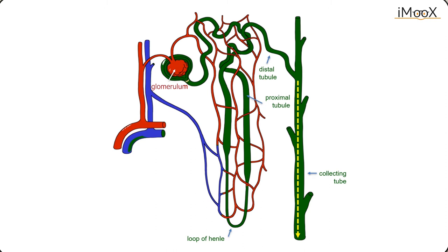To do so, the tubular system of the kidney is built in four consecutive departments with different functioning. The proximal convoluted tubule reabsorbs ions, water, and nutrients. It removes toxins and it adjusts the pH of the filtrate.